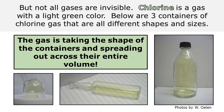But not all gases are invisible. Chlorine is a gas with a light green color. Below are three containers of chlorine gas that are all different shapes and sizes. The gas is taking the shape of the containers and spreading out across their entire volume.